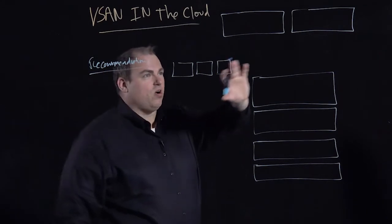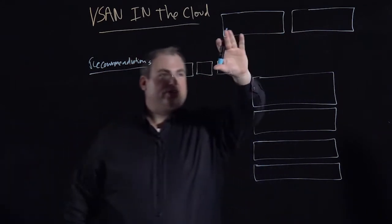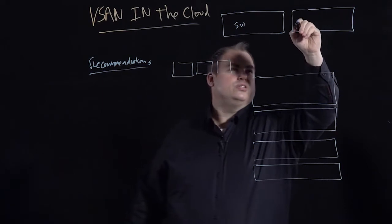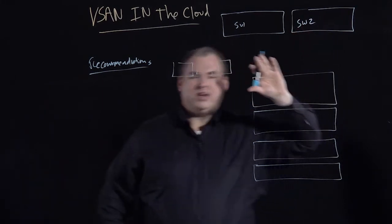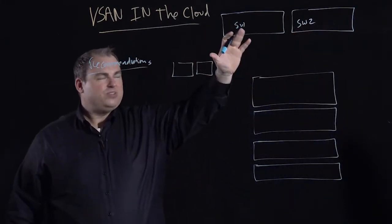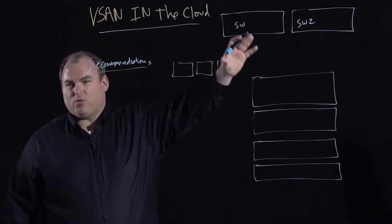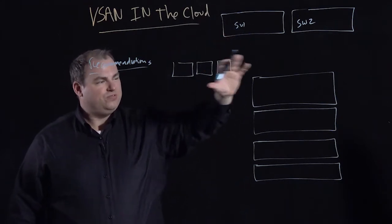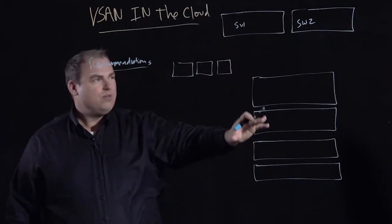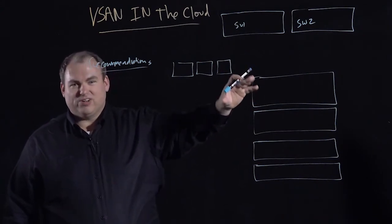First, in any architecture, you've got to start with a couple of switches. We're going to say switch one and switch two. These can be leaf switches off the spine, they can be top of rack, they can be customer access switches. vSAN is fine with most switch configurations.